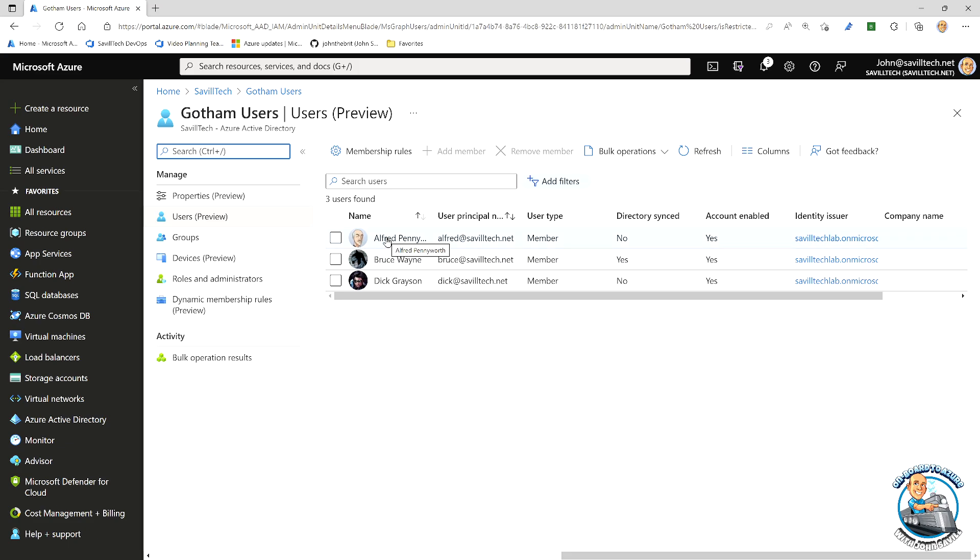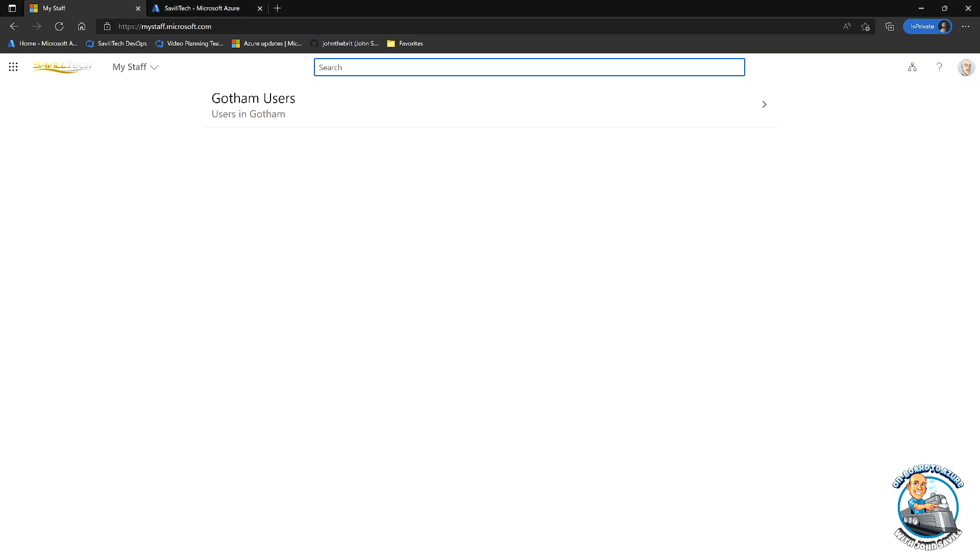In this case, remember, I assigned Alfred that help desk admin role for this administrative unit. So if I jump over and actually look at Alfred. This is signed in now as Alfred. If I go to mystaff.microsoft.com, which is a nice little portal to use for those kind of departmental administrators, notice they only see Gotham users. And then if they dive in and actually look, they'll only see those people that they have permissions for.